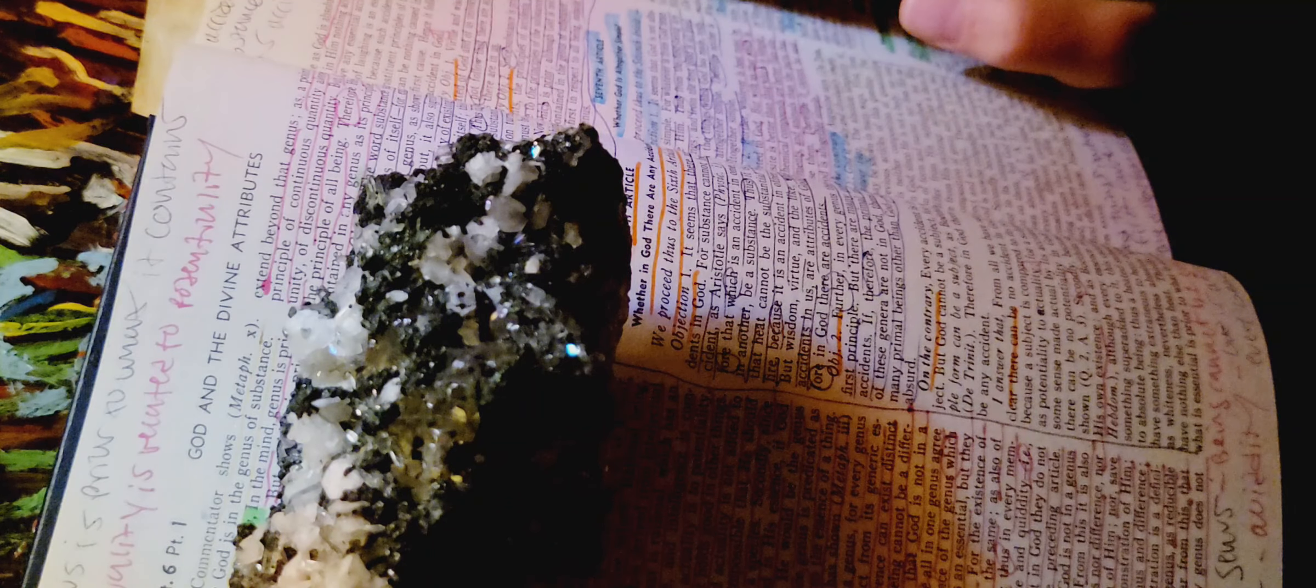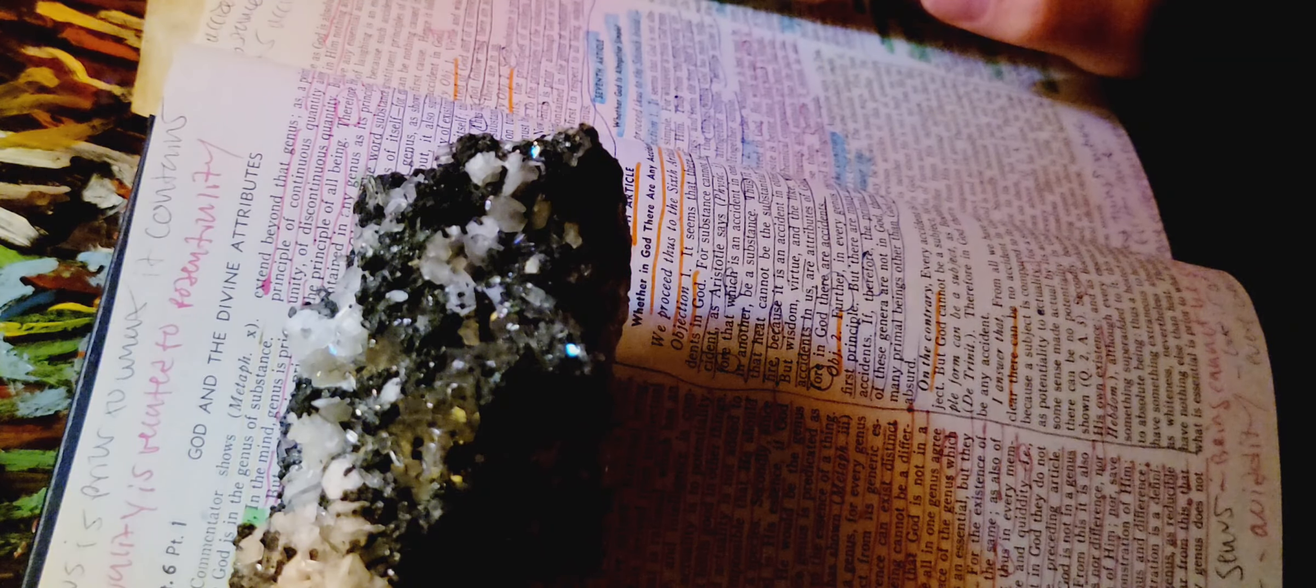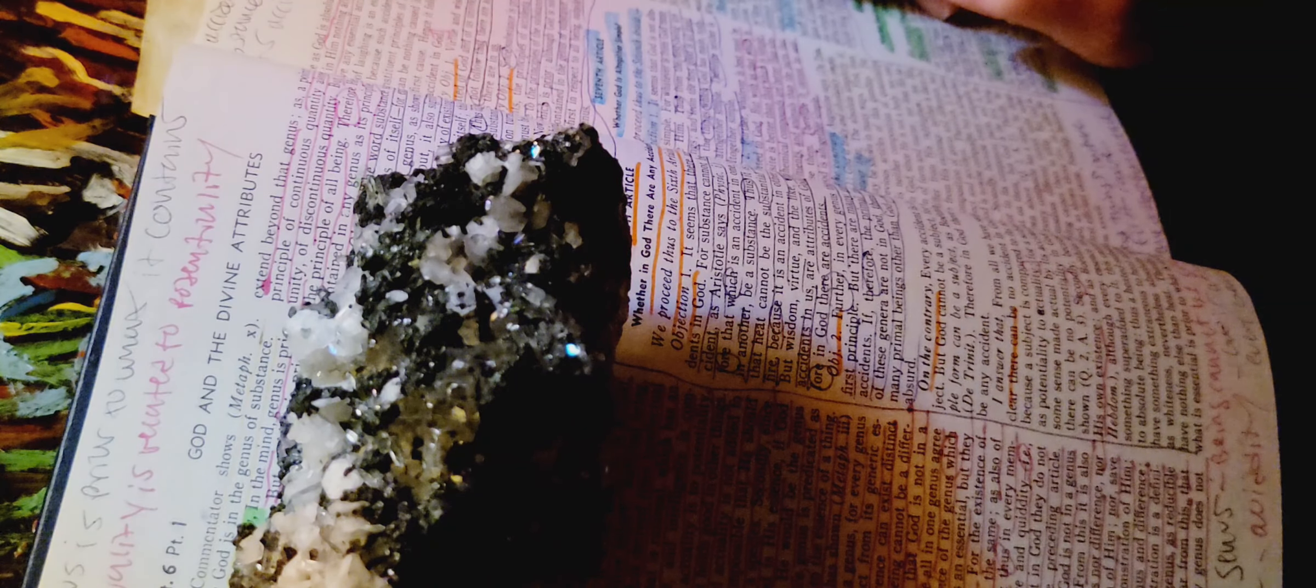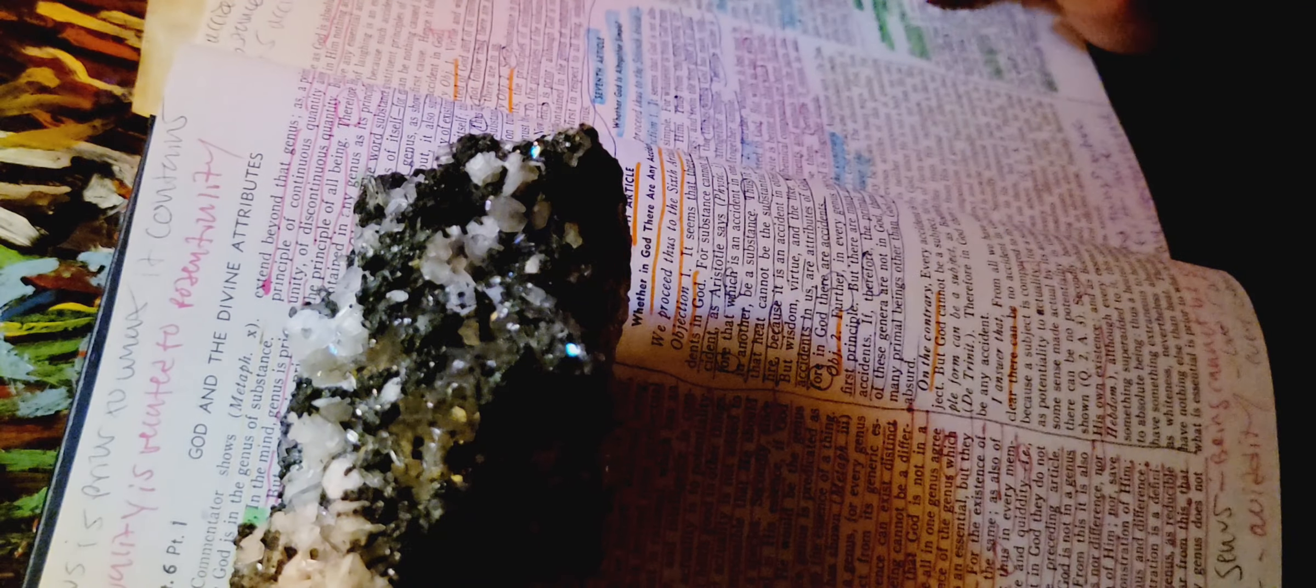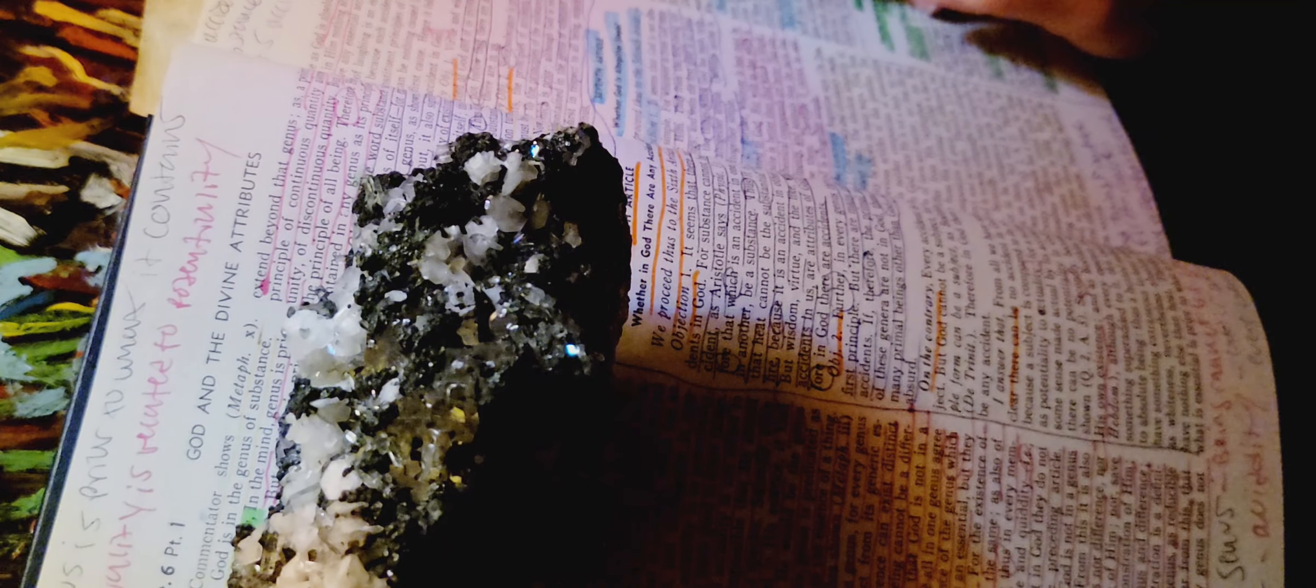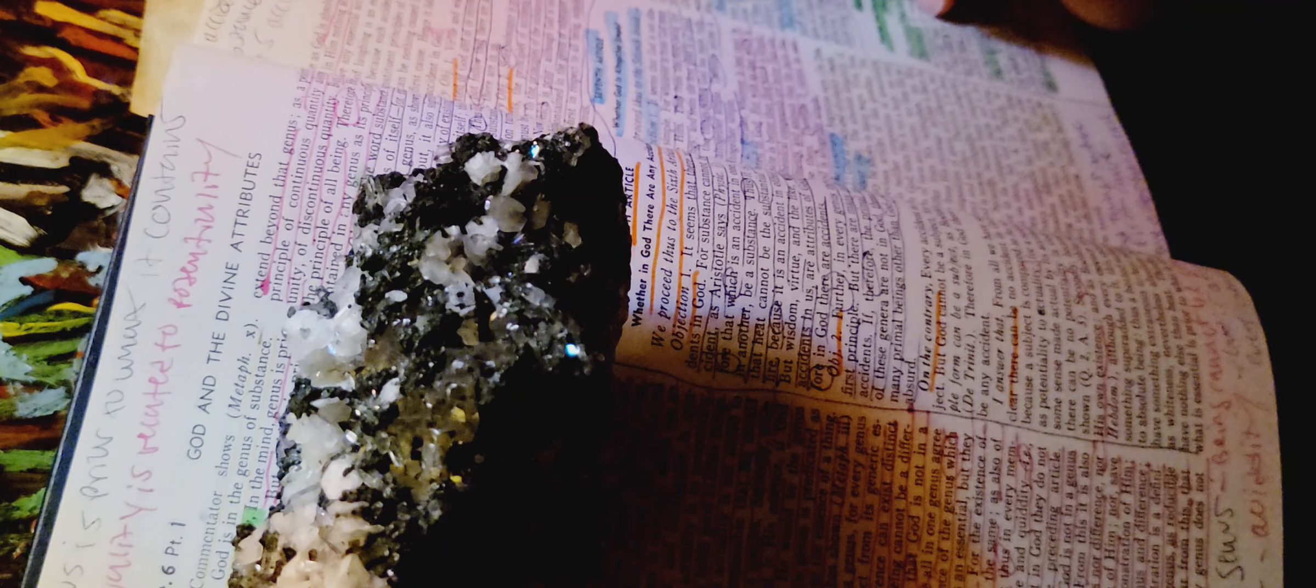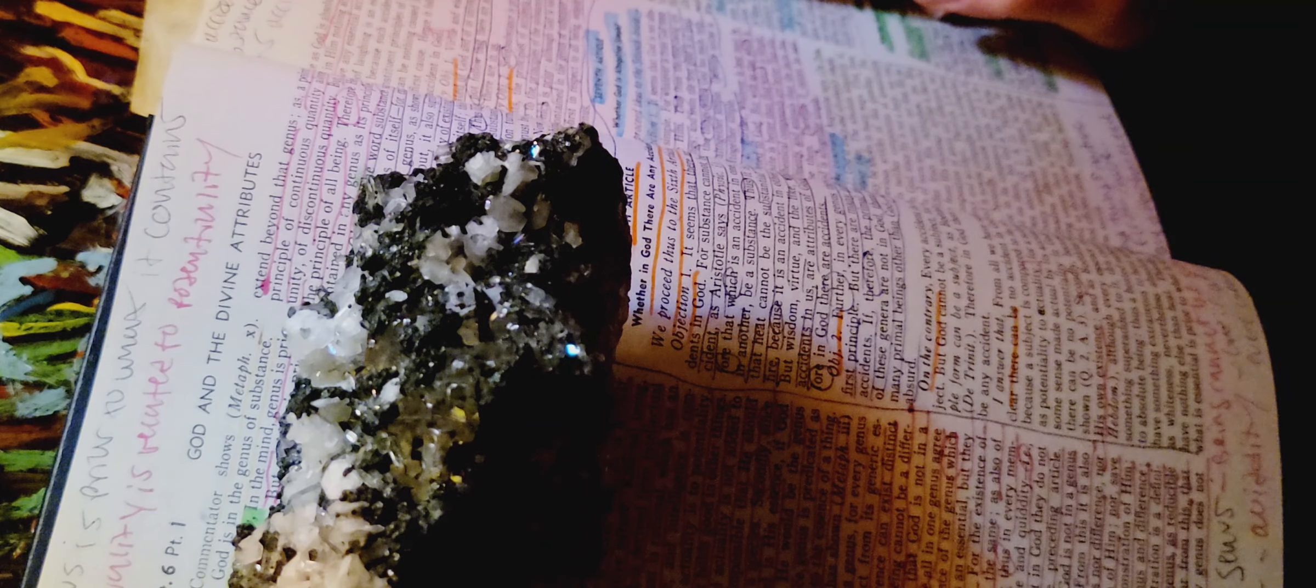But even if this could be said of whatever has a form, that is, it has something which is not itself, as in a white object, there is something which does not belong to the essence of white. This is a clever one. You have the white, there can be something in that white that isn't white. Nevertheless, in the form itself, there is nothing besides itself. And so, since God is absolute form, God is absolute being, he can be in no way composite.